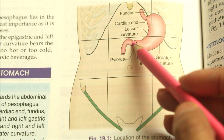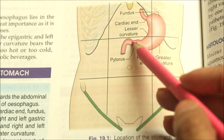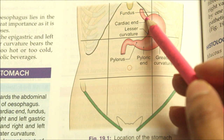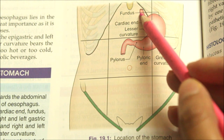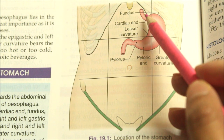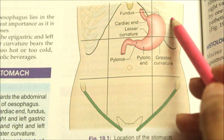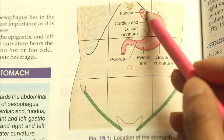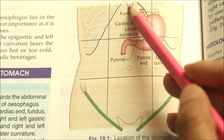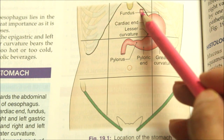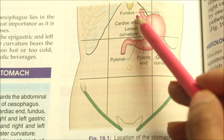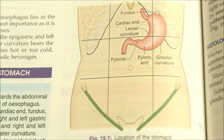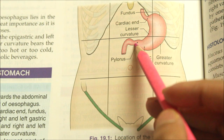The first orifice is the cardiac orifice. It is joined by the lower end of the esophagus and lies behind the left seventh costal cartilage, 2.5 centimeters from its junction with the sternum, at the level of vertebra T11.